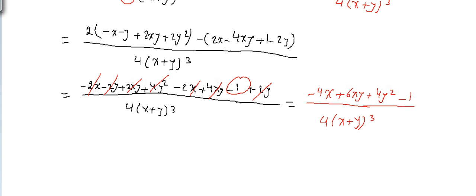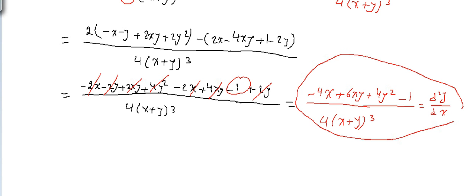And that's it — we can't simplify further. This is the final result for d²y/dx², the second derivative of the implicit equation.